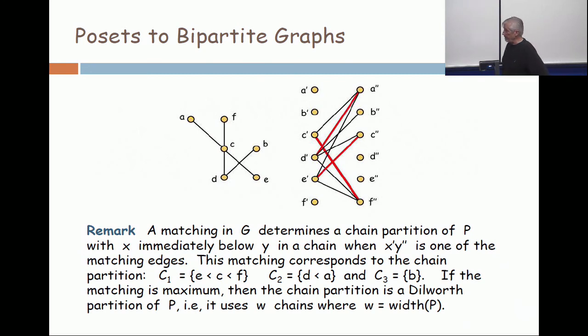Now, that may not be the only maximum matching, there might be more. But that's certainly one, and I can see that because A', B', and F' have no neighbors. And that's reflected in the poset by the fact that A, F, and B are maximal elements.